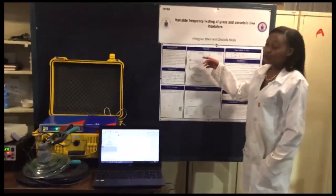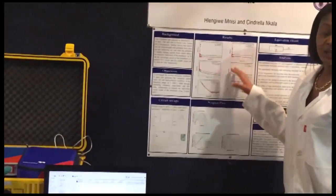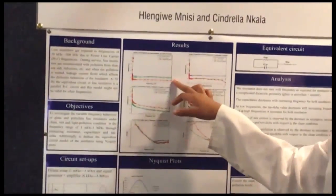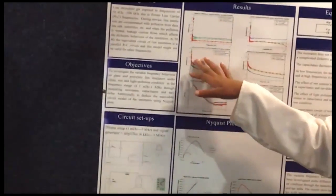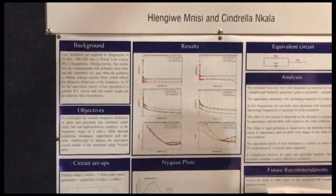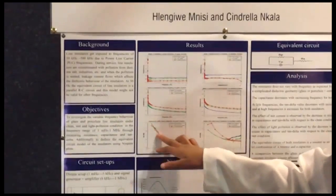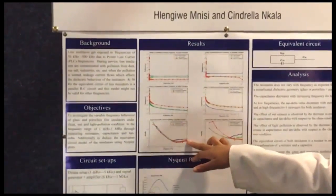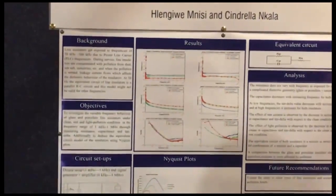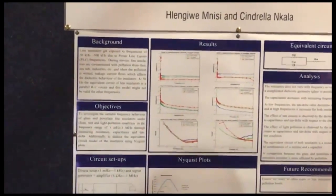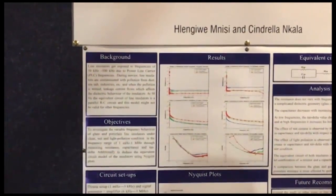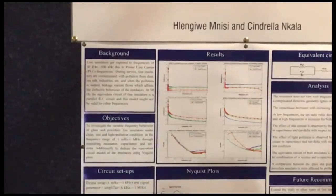The experimental results of the insulator are shown. The resistance does not vary with increase in frequency. The capacitance decreases with increase in frequency. At low frequencies the tan delta decreases and starts increasing with increase in frequency. The effect of light pollution is observed by the decrease in resistance, increase in capacitance and tan delta with respect to the clean and wet condition.